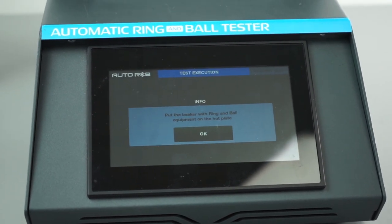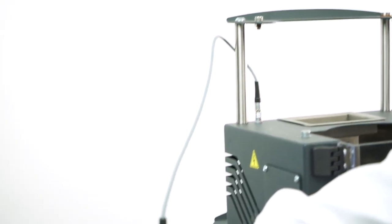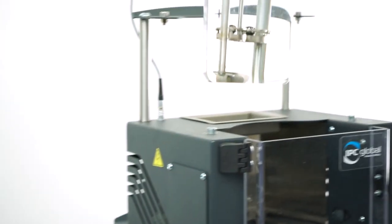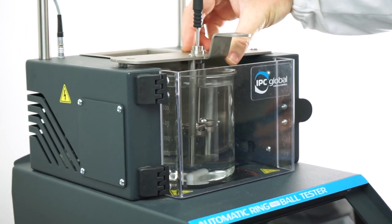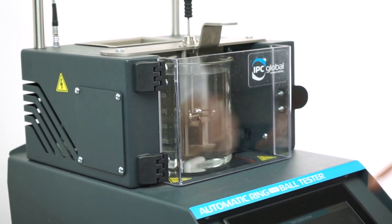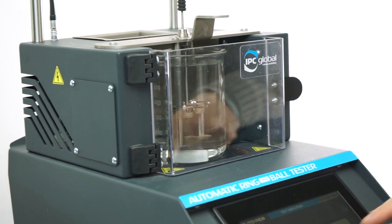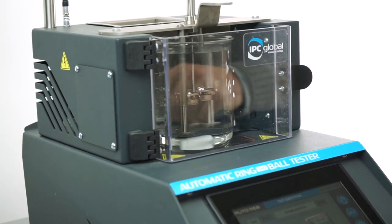Prepare the samples according to the reference standard and condition sample and test liquid at the required temperature. Mount rings, centering devices and balls. Insert the temperature probe, put the beaker onto the hotplate, and press OK.